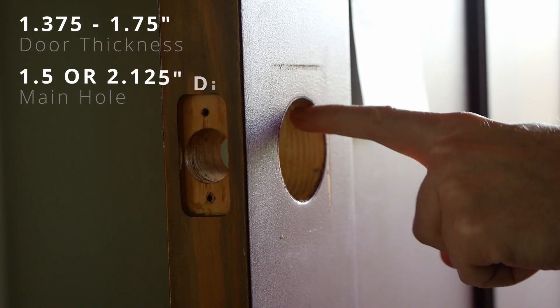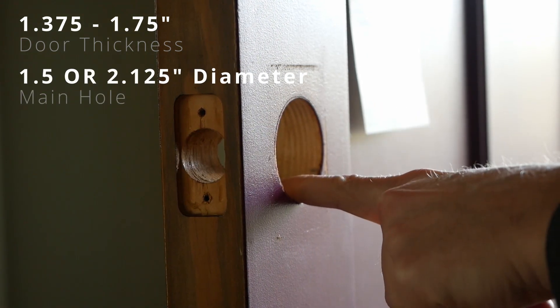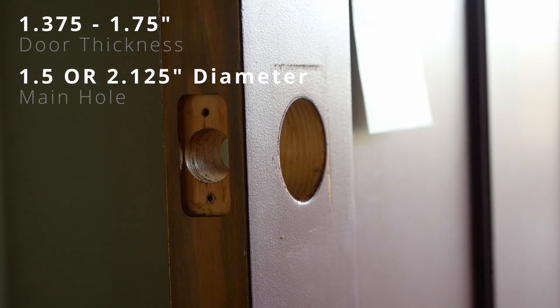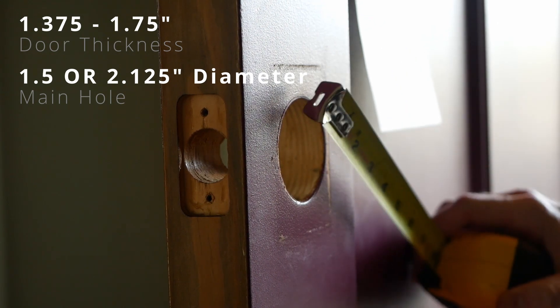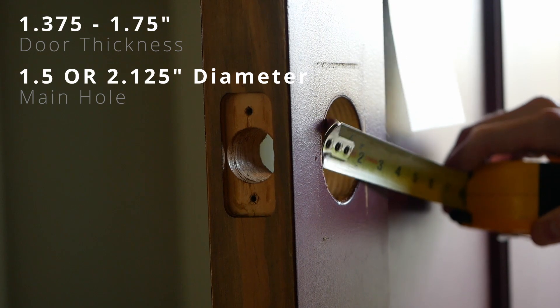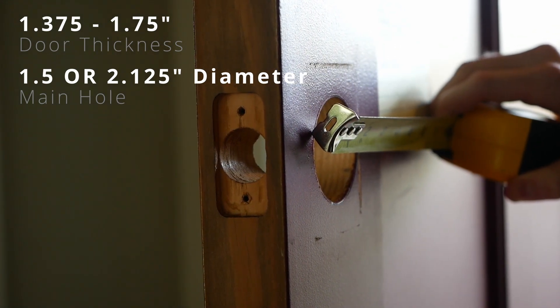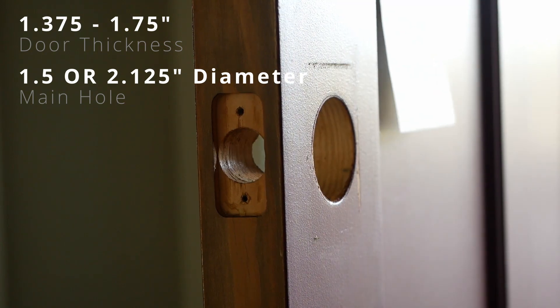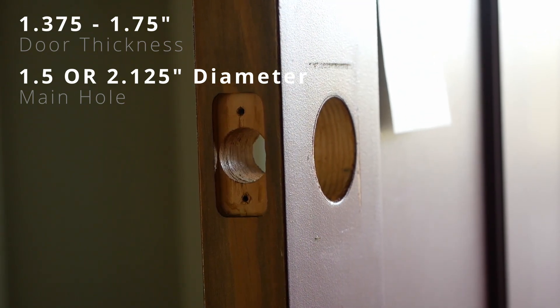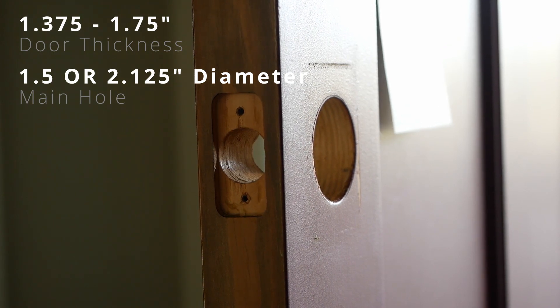Your main hole here needs to be either one and a half or two and one eighth, and this one is looking like two and one eighth, so we're good there. You know, again these are just kind of standard dimensions so there's not really a whole lot to worry about here. It's just a double check really.